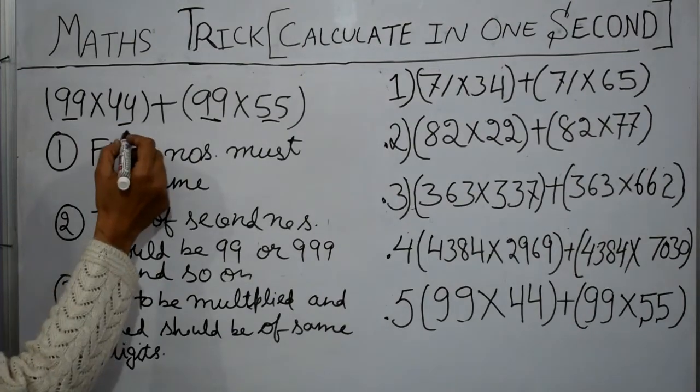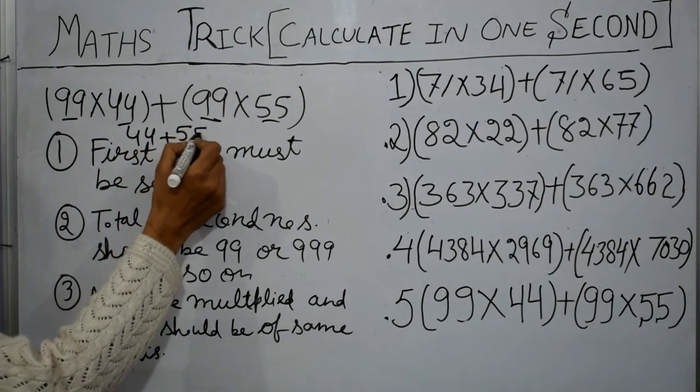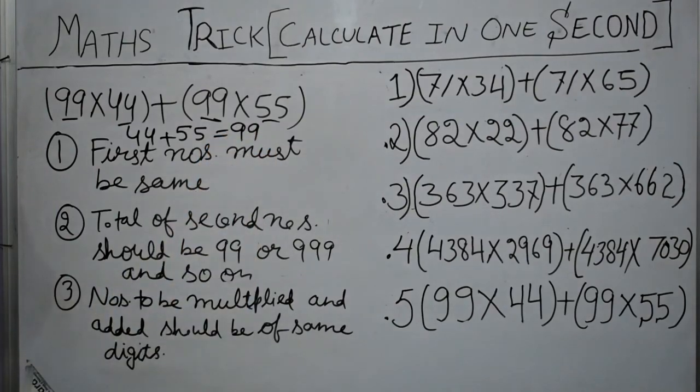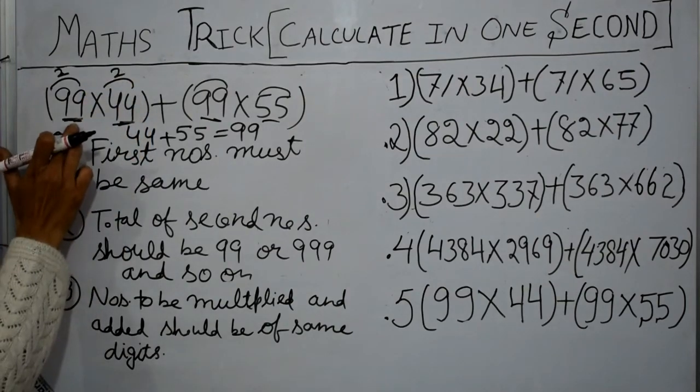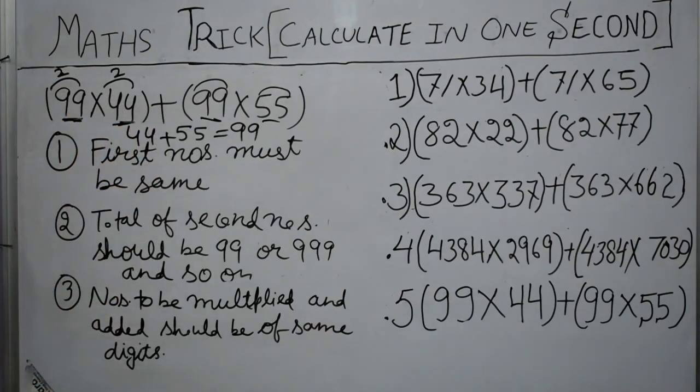In this case second numbers are 44 and 55 and their total is 99. The third condition is numbers to be multiplied and added should be of same digits. That is, we are calculating about two digits, then we can multiply only a two digit number with a two digit number. If we are moving on to three digit numbers, then we can multiply only three digit numbers with three digit numbers.